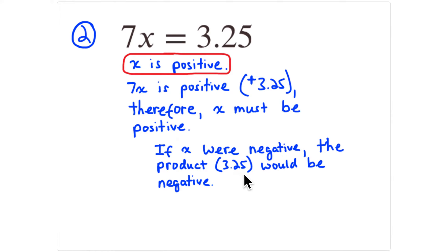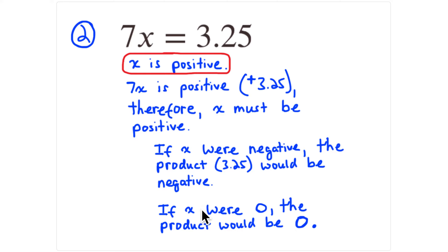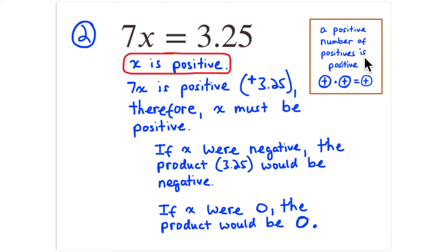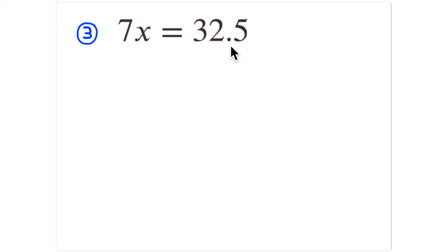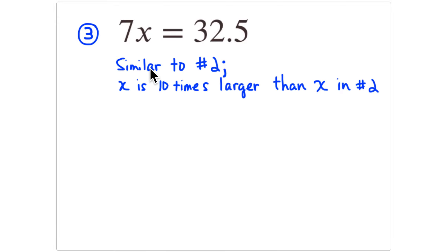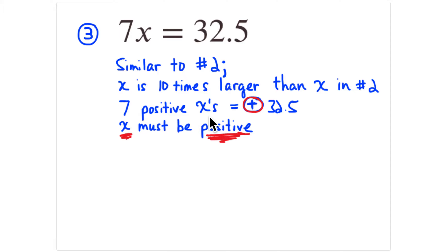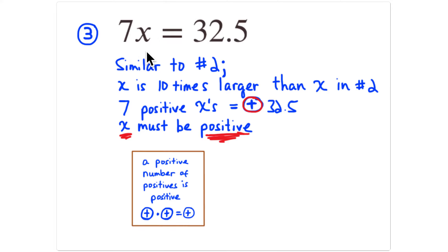If x were negative, the product 3.25 would be negative — a positive number of negatives gives a negative product. If x were zero, the product would be zero. So x must be positive. Problem 3 is 7x equals 32.5, which is just 10 times greater than problem 2, so x is still positive — a positive number of positives is positive.